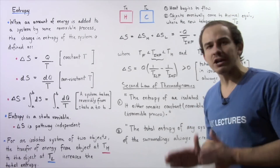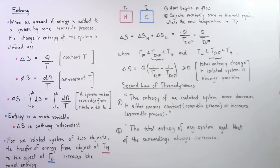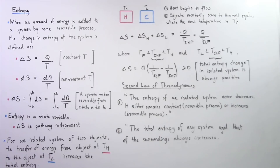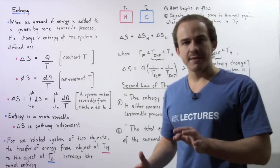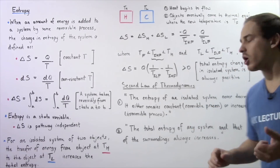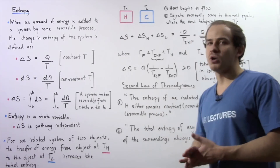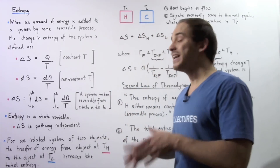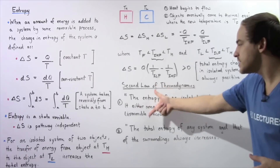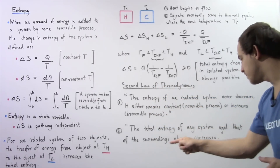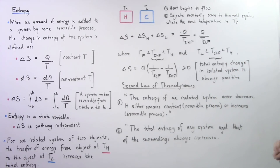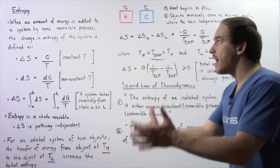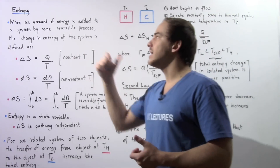This leads directly into the general version of the second law of thermodynamics, which can be stated in one of two ways. First: the entropy of an isolated system never decreases — it either remains the same, which is only true for reversible processes, or it increases, which is true for irreversible processes. Because reversible processes don't actually exist in reality as they would take an infinite amount of time, we can restate this as: the total entropy of any system plus the entropy of its surroundings always increases in any real process. This is how we define the second law of thermodynamics using the concept of entropy.